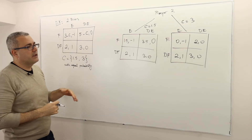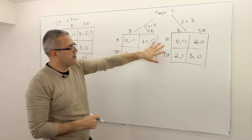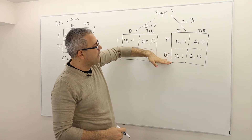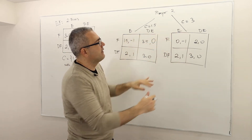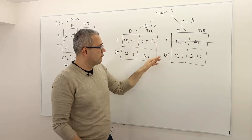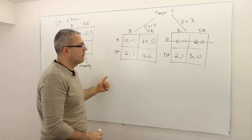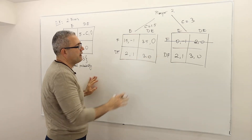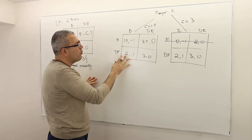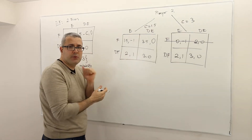So here, in the previous version we knew — which is this case — we knew that don't fight is strictly dominating fight, so player 1 will never play fight. Player 1 of this type is going to play don't fight. Here, however, we no longer have a dominant strategy for player 1.